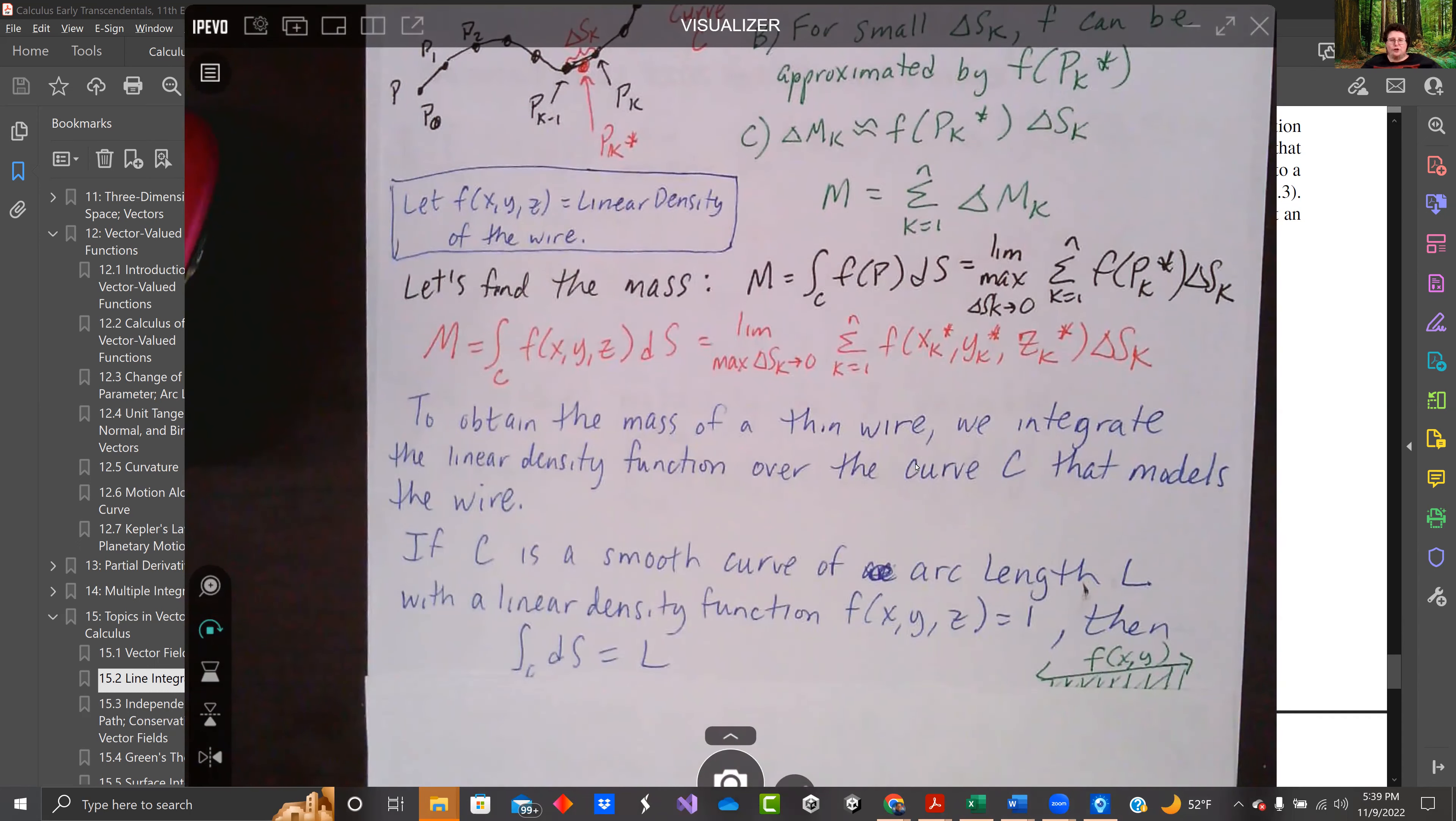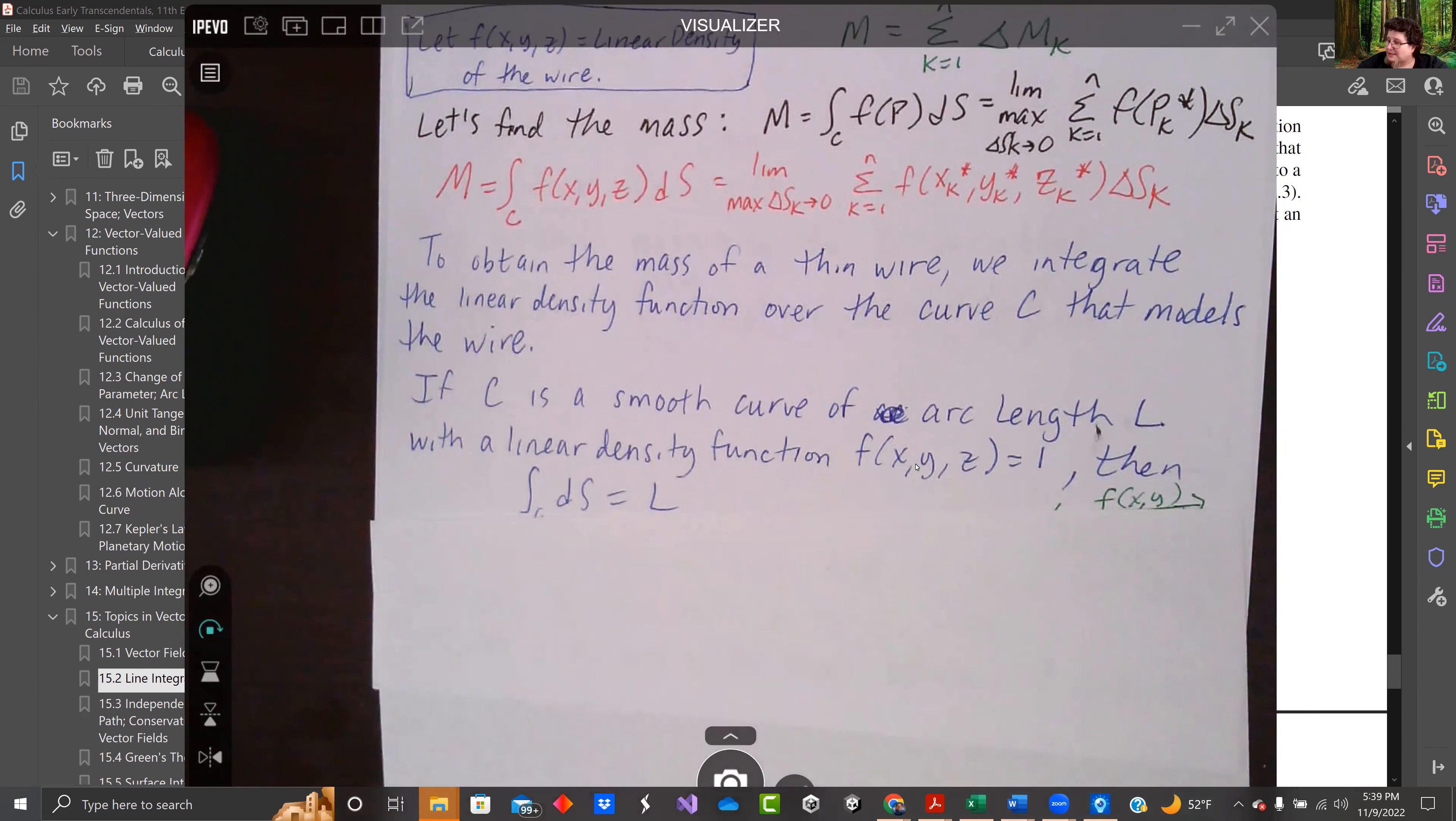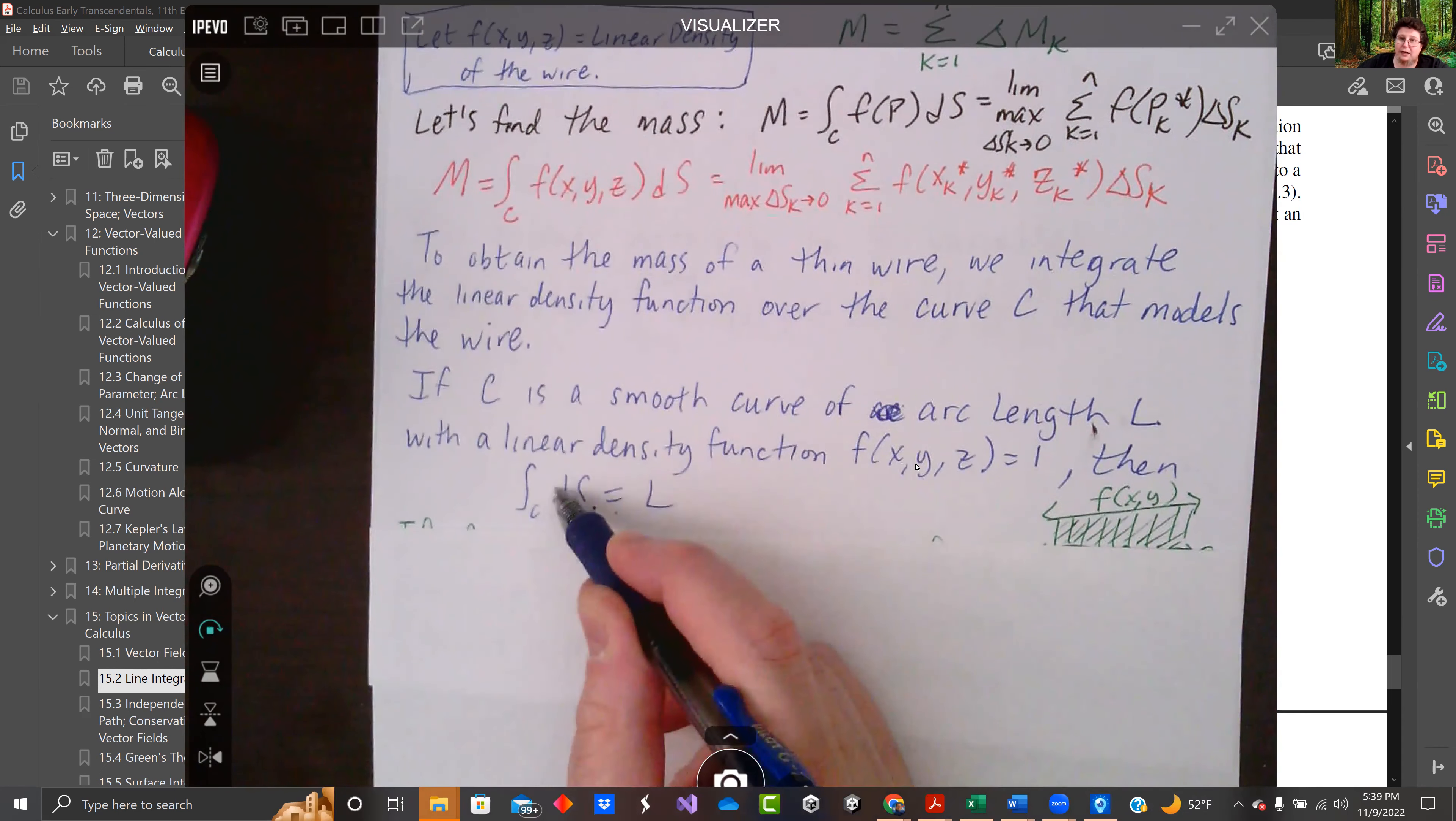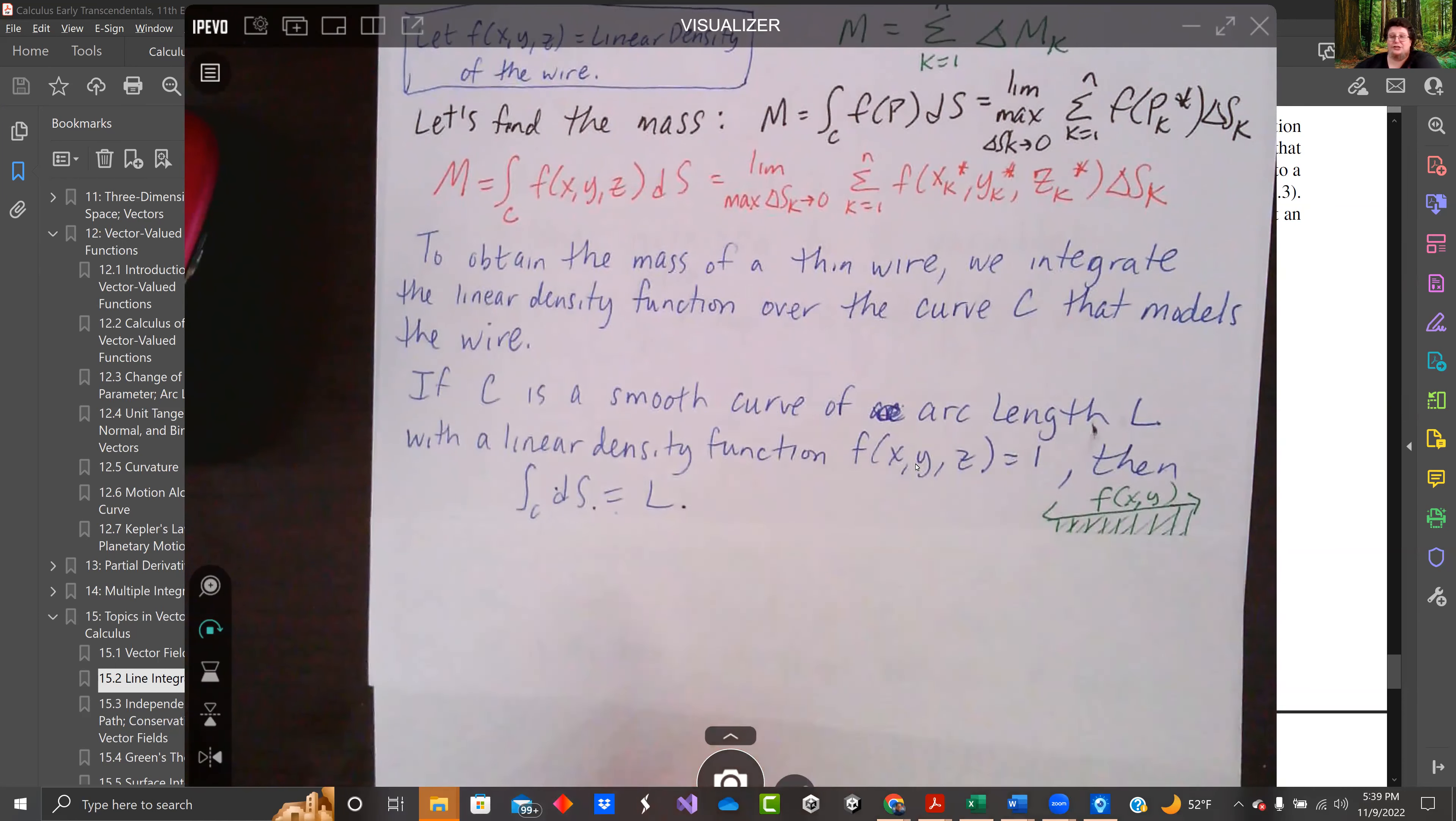If c is a smooth curve of arc length, and if the linear density function is one, then we just have the arc length, or ds is arc length basically. If the function is one, we're just going to get out the length. Because mass is density times length, if the density is one, mass is just length.